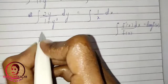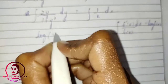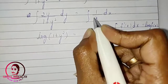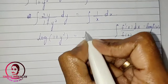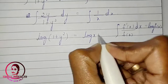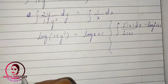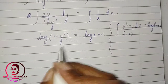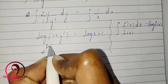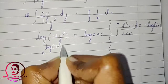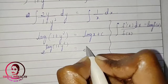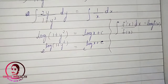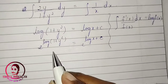So we get log(1 + y²) = log x + c. Now I take e to the power on both sides: e^(log(1 + y²)) = e^(log x + c).